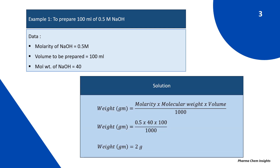Applying the formula: weight in grams = molarity × molecular weight × volume ÷ 1000. That is 0.5 × 40 × 100 ÷ 1000. By calculating we get 2 grams. So 2 grams of NaOH is required to prepare 100 ml of 0.5 molar NaOH solution.